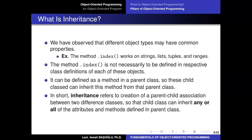Now let's speak about the second important concept. In terms of importance, inheritance comes first — it is the most important pillar of object-oriented programming and will make our lives very, very easy. We have observed that different object types may have common properties; for example, the index method works on strings, lists, tuples, and ranges.